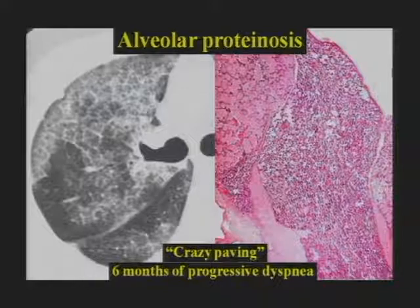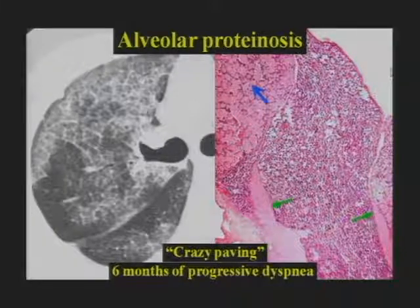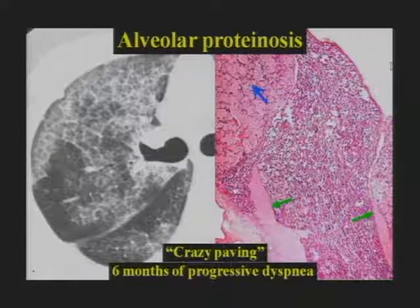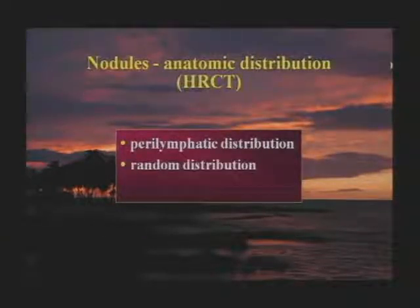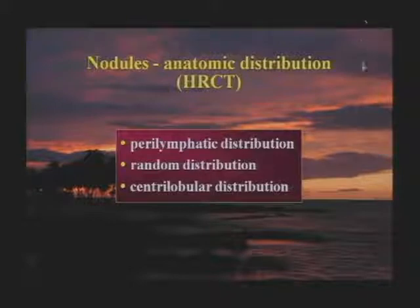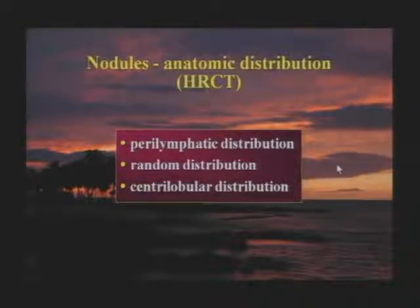The histology of alveolar proteinosis shows filling of alveoli with a proteinaceous material causing the ground glass, with the same material accumulating in interlobular septa causing the crazy paving appearance. Diffuse lung nodules: when nodules are the predominant abnormality on CT, we can characterize them into one of three specific patterns, which helps with differential diagnosis. The three patterns are perilymphatic, random, and centrilobular.